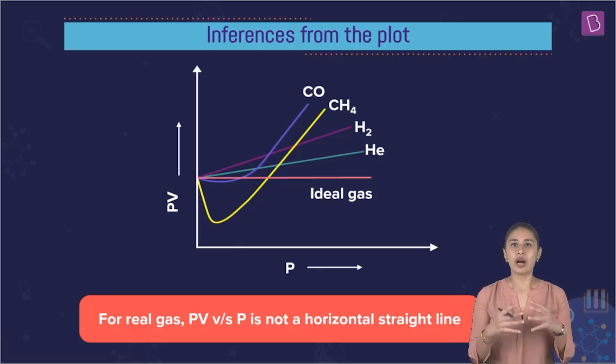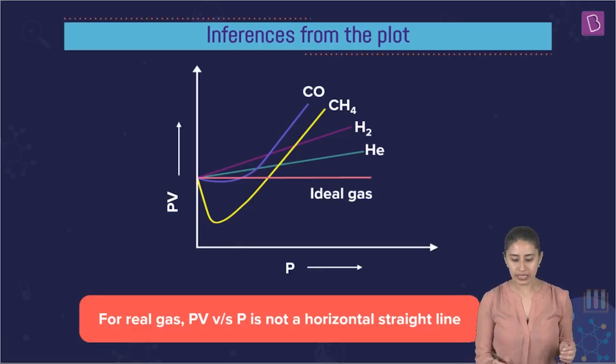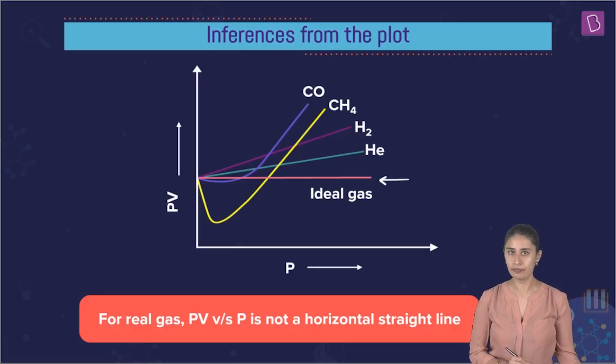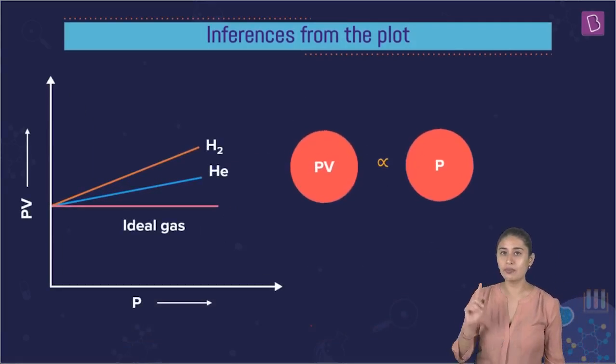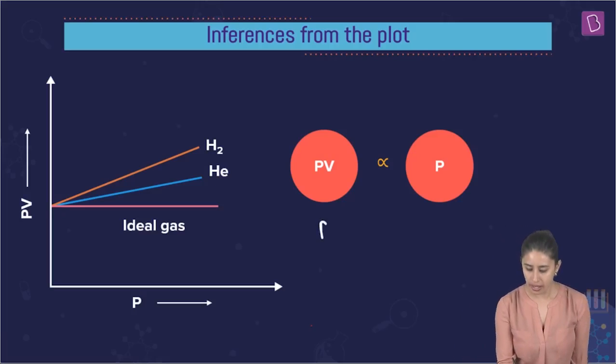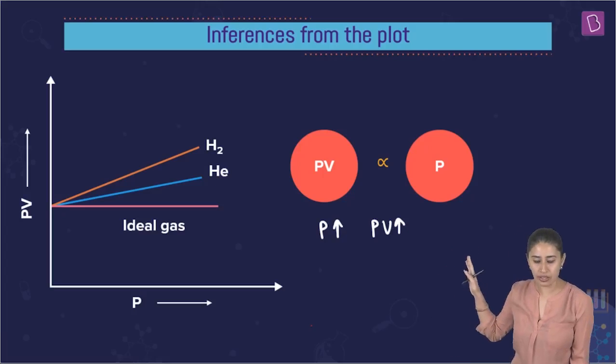We need to understand the real gas curves. So stay with me. I'm going to divide these curves in two parts. First one is these lines which are above this ideal gas line. Have a look at hydrogen and helium. This is case number one when the PV is directly proportional to P. As we are increasing the pressure, PV is also increasing.